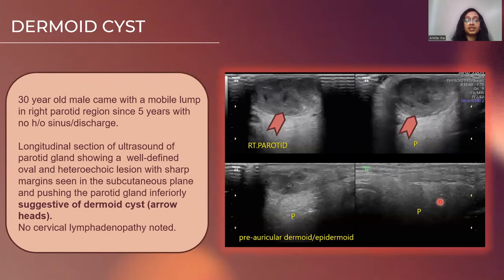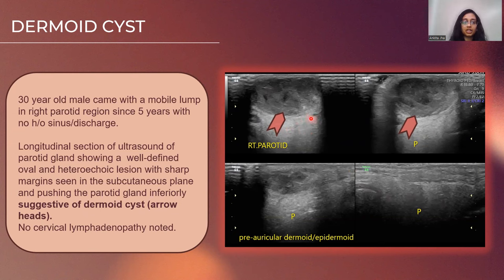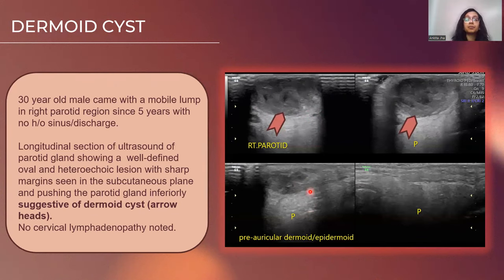Here we have a 30-year-old patient who had a mobile lump in the right parotid region since 5 years with no history of sinus or discharge. On longitudinal section ultrasound, we can see a well-defined oval heterechoic lesion with a sharp margin in the subcutaneous plane, seen pushing the parotid inferiorly, which is indicative of a pre-auricular dermoid or epidermoid cyst.